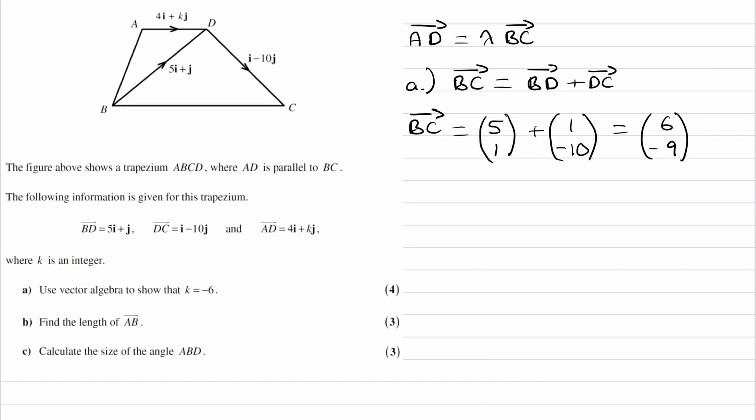And then we can work this out. I'll write in column notation, so BD is 5, 1. And then DC is 1, minus 10. BC is then going to be 6, minus 9. So the reason we've worked out BC is now we can use this equation, which you'll remember we got from AD being parallel to BC.